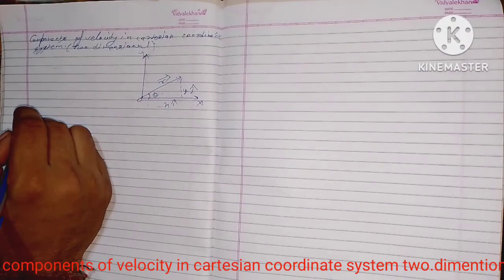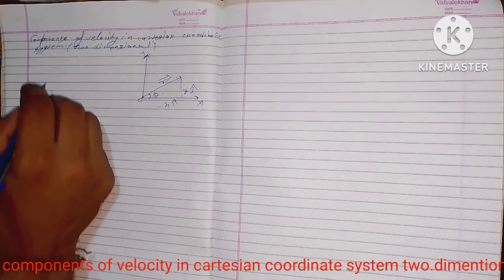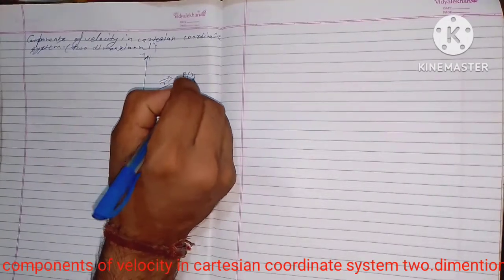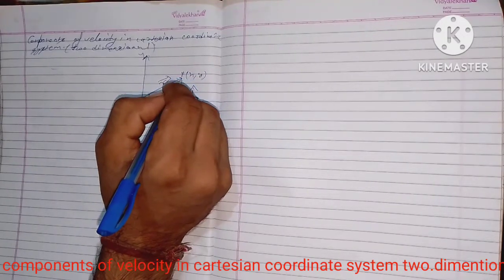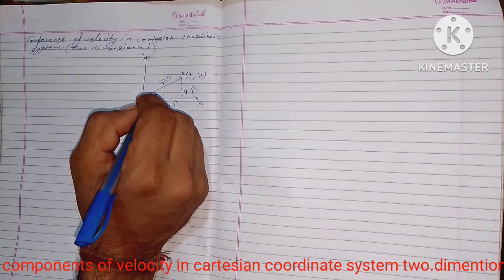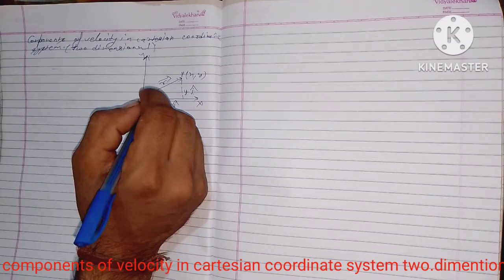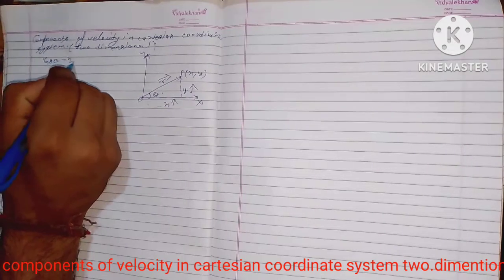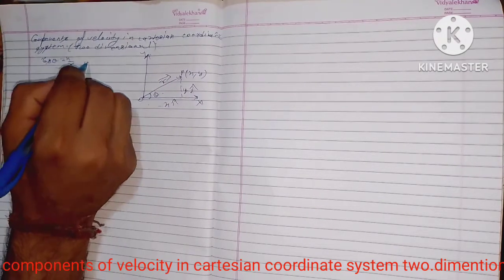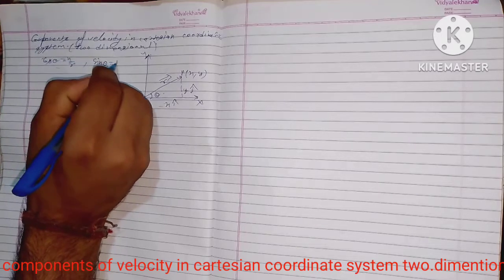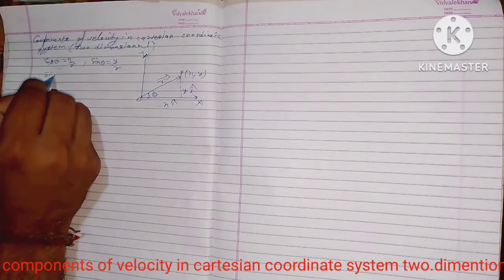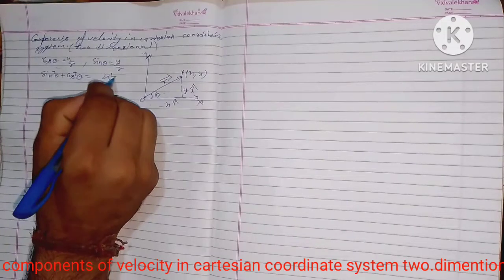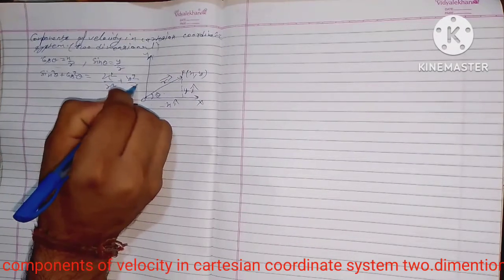If X and Y are Cartesian coordinates of the point P, having polar coordinates (R, θ) in a two-dimensional system, then cos θ = X/R and sin θ = Y/R. Then sin²θ + cos²θ = X²/R² + Y²/R².